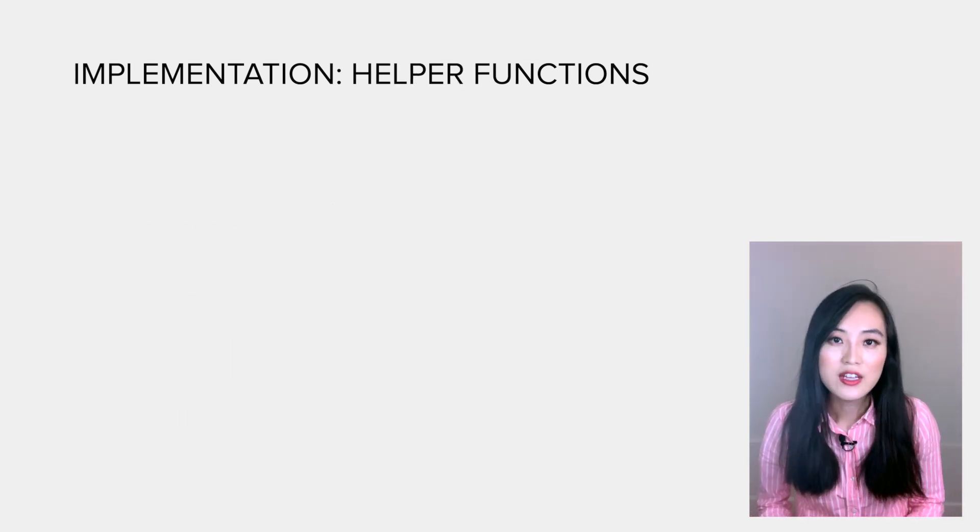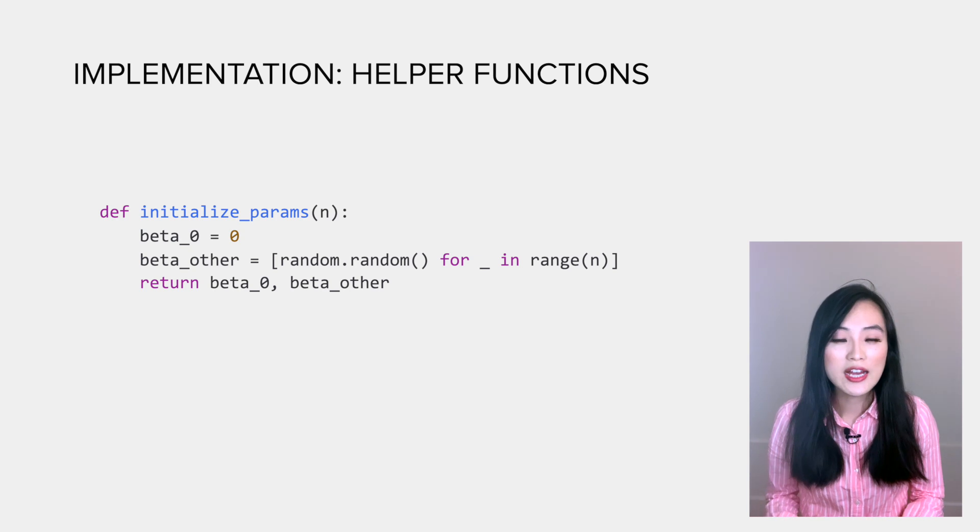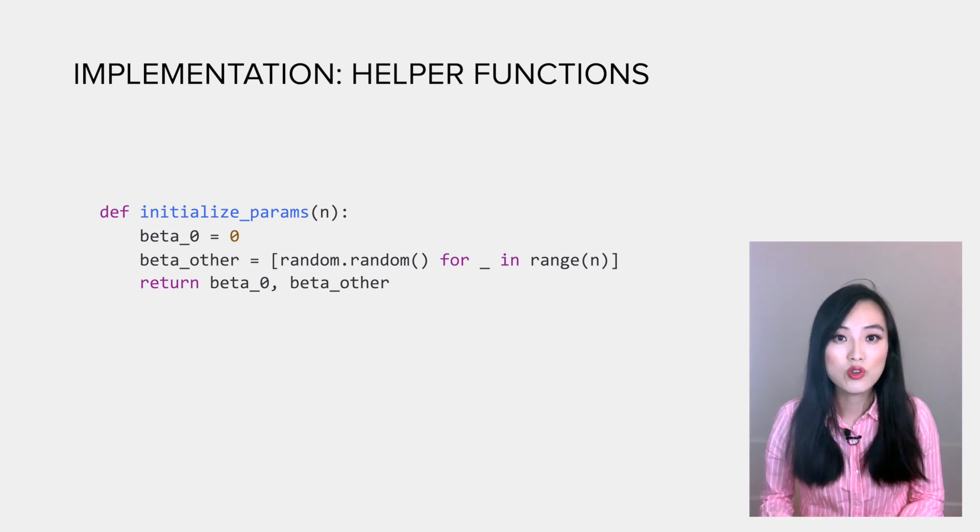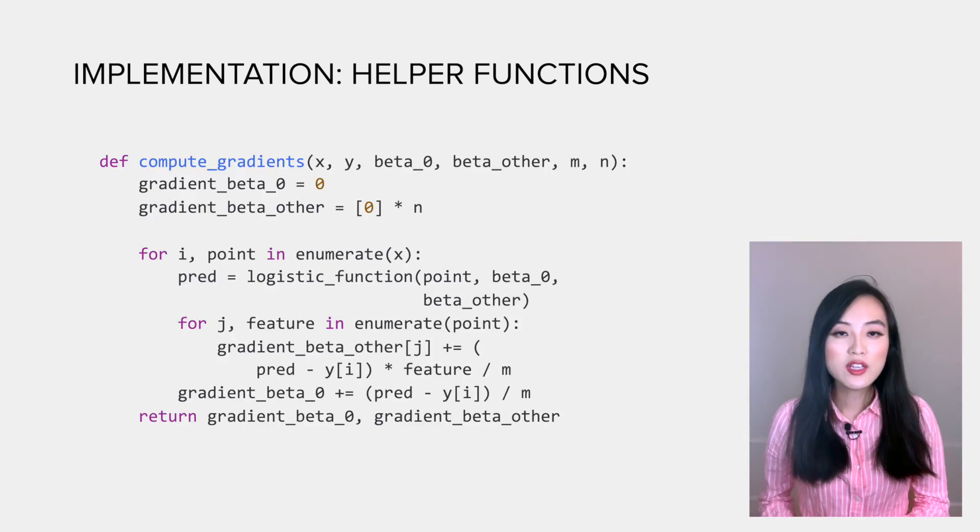Now let's go over the helper functions. The first helper function is to initialize parameters. It's very straightforward. We simply set the starting value of beta 0 as 0 and the starting values of other betas as random values.